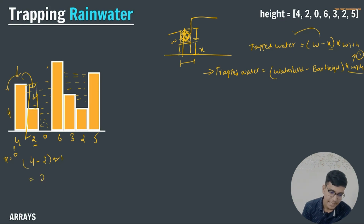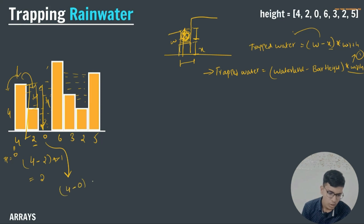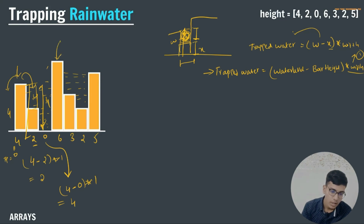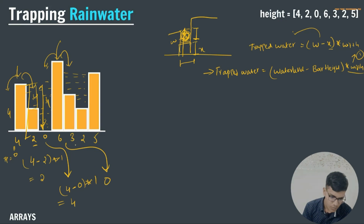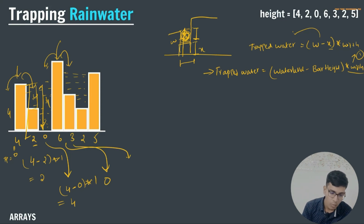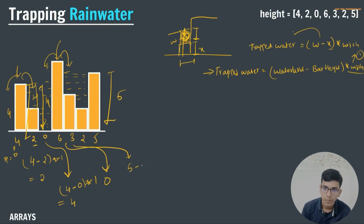For ascending pattern bars, water spills across all, so total trapped = 0. Same for descending pattern — total trapped = 0. These are the extreme conditions. Now let us consider three bars: left boundary height = 4, middle bar height = 2, right boundary height = 6. The water level on the middle bar is 4. So we can write: water level = min(left boundary, right boundary).